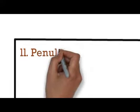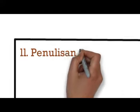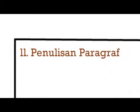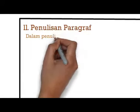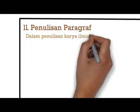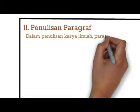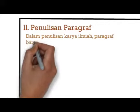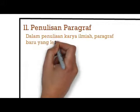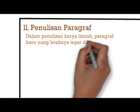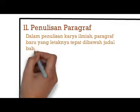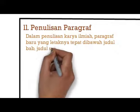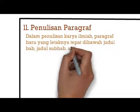Yang kesebelas penulisan paragraf. Paragraf baru yang letaknya tepat di bawah judul bab, judul subbab, atau judul anak subbab ditulis rata kiri. Sedangkan paragraf baru yang mengawali penulisan selanjutnya menjorok ke dalam dengan jarak satu tab atau lima ketukan dari batas tepi kiri.